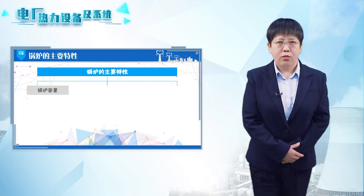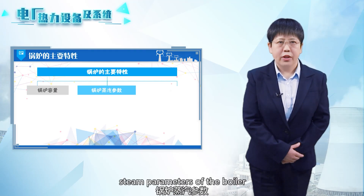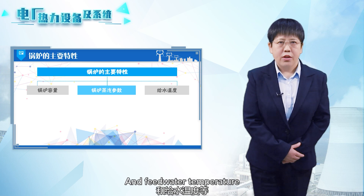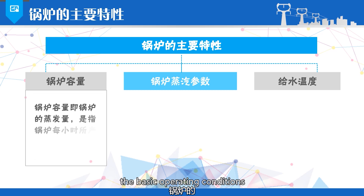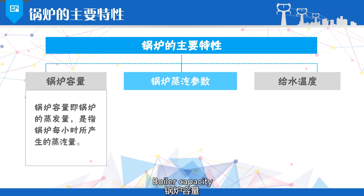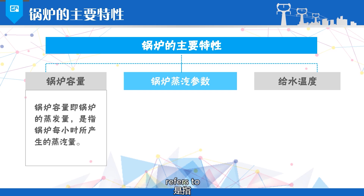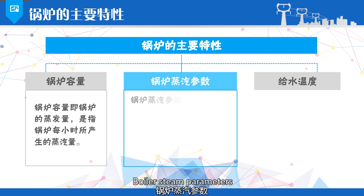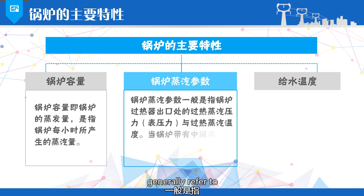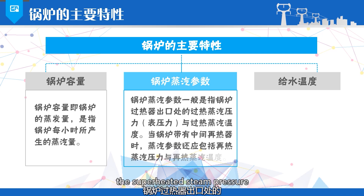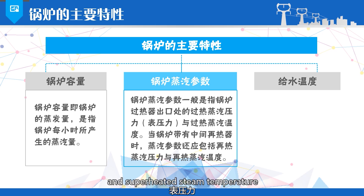The main characteristics of a boiler refer to the boiler capacity, steam parameters, and feed water temperature, which are used to describe the basic operating conditions of the boiler. Boiler capacity, also known as the boiler's evaporation rate, refers to the amount of steam produced by the boiler per hour. Boiler steam parameters generally refer to the superheated steam pressure and superheated steam temperature at the outlet of the boiler superheater.